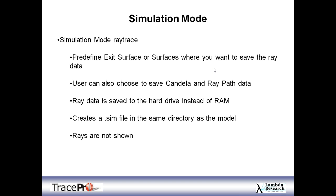In simulation mode ray trace, the first thing you do is pre-define an exit surface or surfaces where you want to save the ray data. You tell TracePro in advance to save ray data on specific surfaces. You can then choose, in addition to the ray data — which gives you radiance maps and incident ray tables — whether to also save the candela data and the ray path data. Ray path data sorts rays into discrete paths from the source to your target surface. Ray data is saved to the hard drive instead of RAM, so your limit is now your hard drive, not RAM. I've run ray traces in excess of 100 million rays using simulation mode.